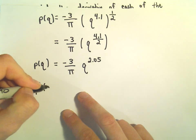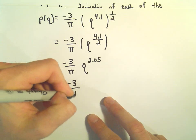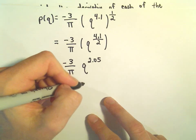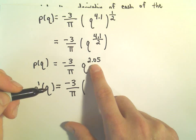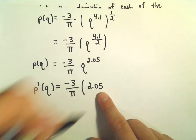So P prime of Q, the negative 3 over pi just kind of gets carried along. And we'll just do the same thing as before. We've got a variable to a number. So that number, that exponent just comes up front, times our variable Q.